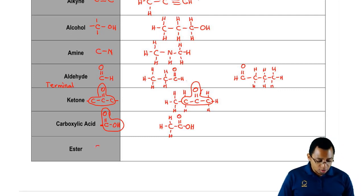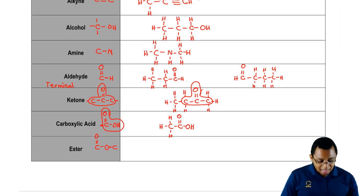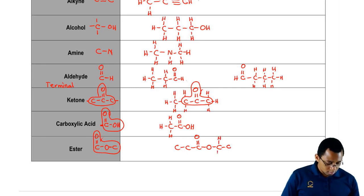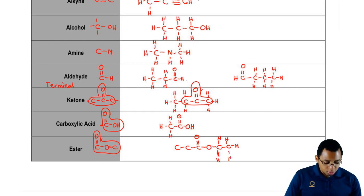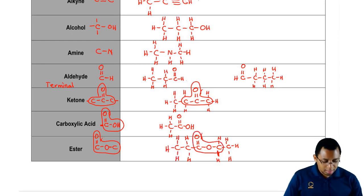Finally, an ester. An ester — we have a carbon double bonded to an oxygen, single bonded to an oxygen, and then that oxygen is single bonded to another carbon. The molecules may be large or small, but you have to be on the lookout for these distinct portions. It's this portion right here that makes it an ester.